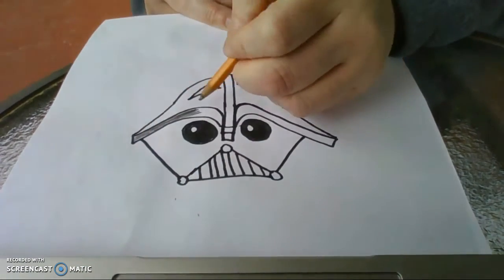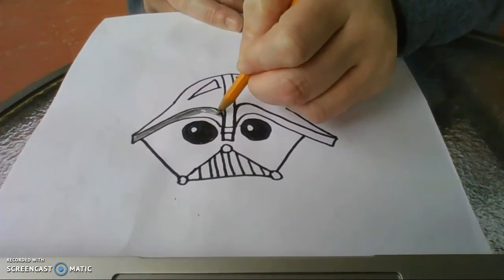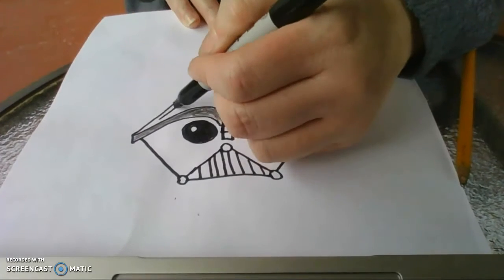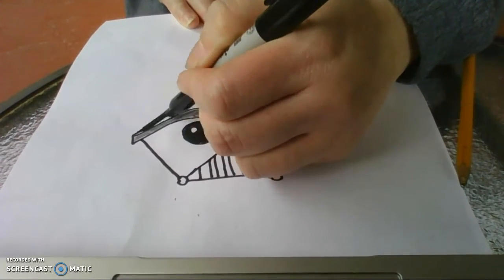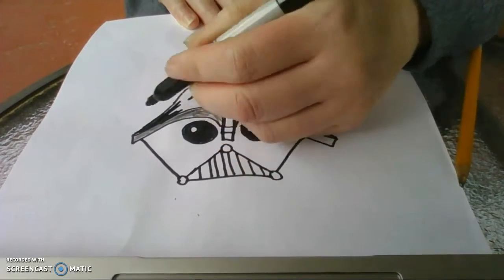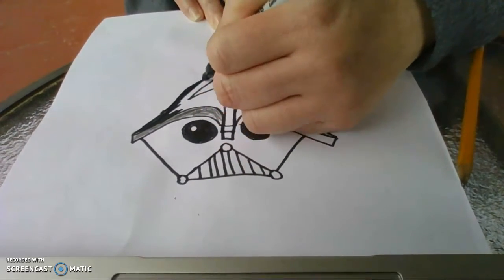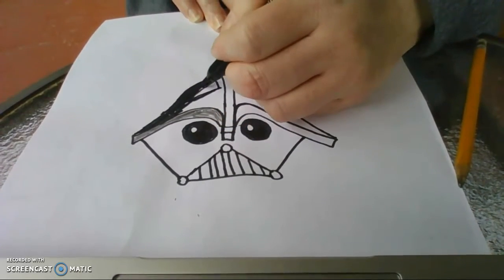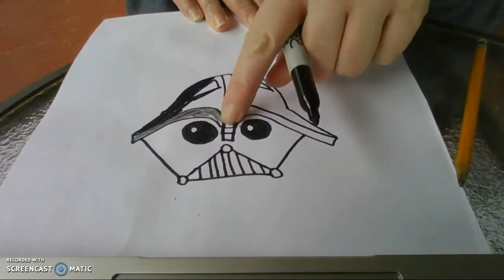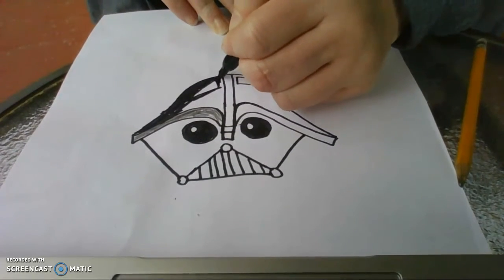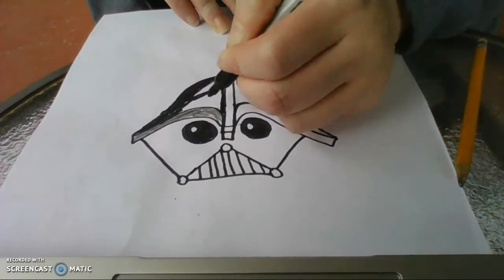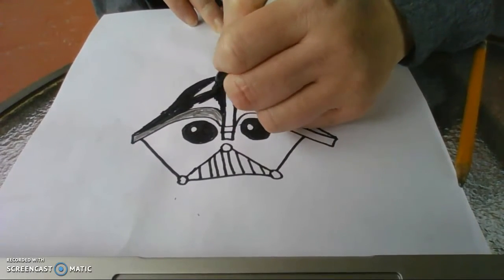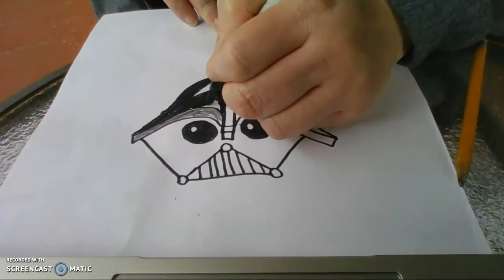And I'm going to just color one side of this so that you can see, and then I'll come back and finish it. And then this part right here will be black. So I'll color, and then I'm going to leave this white.